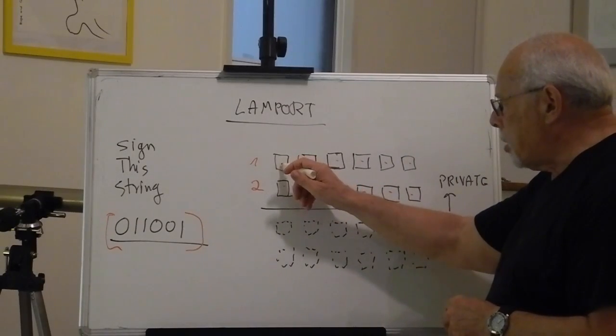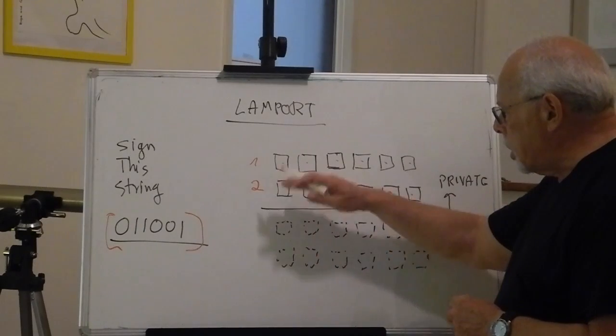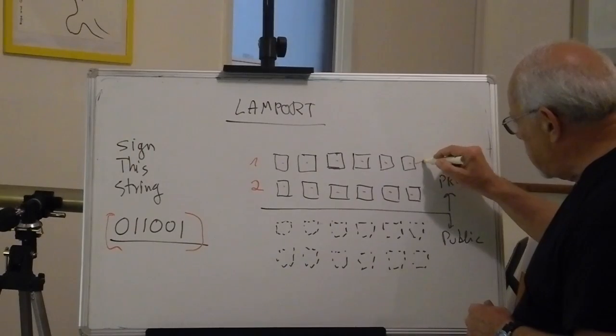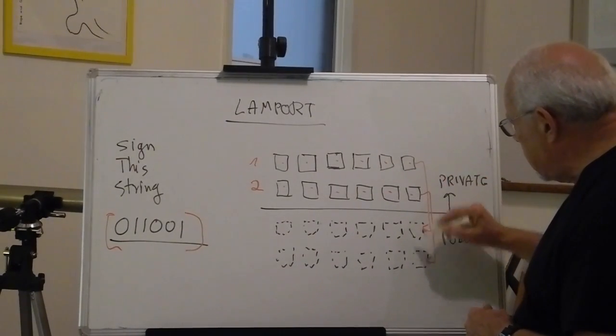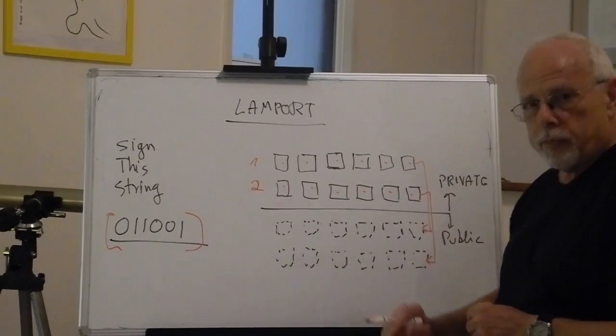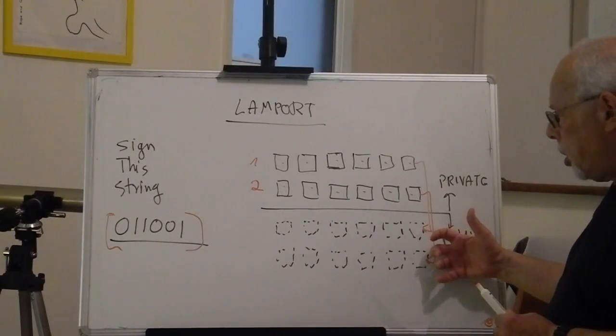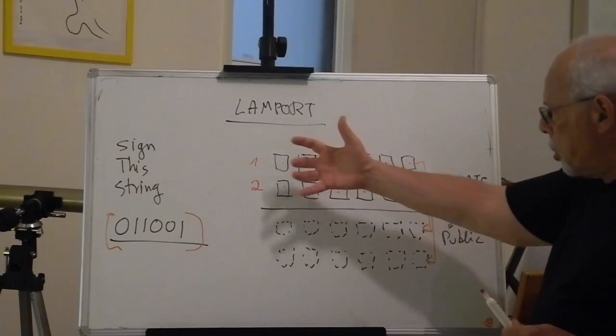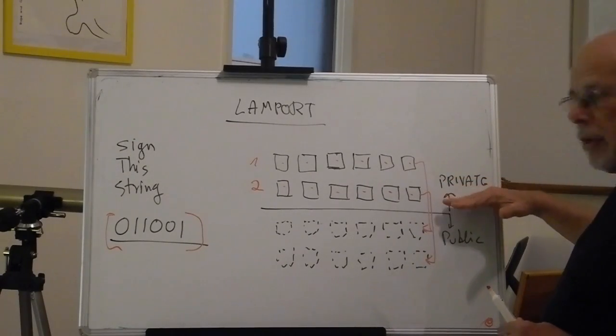So Alice takes this hash function and produces twelve numbers which are corresponding. This number generates this, this, this, this, etc. throughout. These twelve numbers are considered the public key. These twelve numbers are Alice's private key.